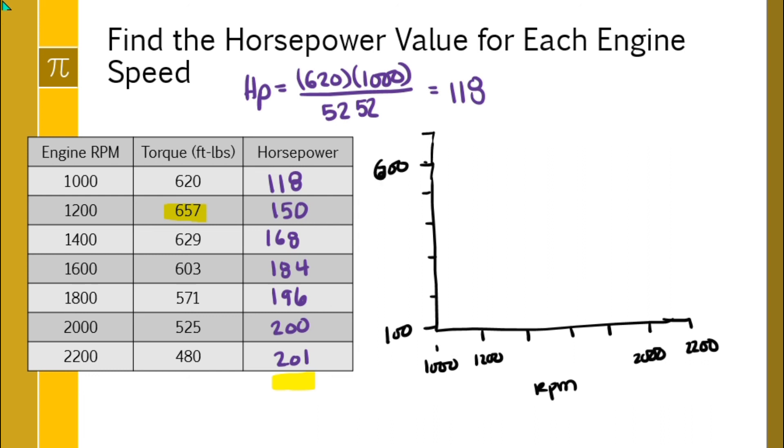And then you would just plot points. So if you were looking at graphing the torque at 1000 RPM, you want to be at about 620. At 1200 RPM, you want to be about 657. And these are very approximate, and then back down to 629 and then over to 600.